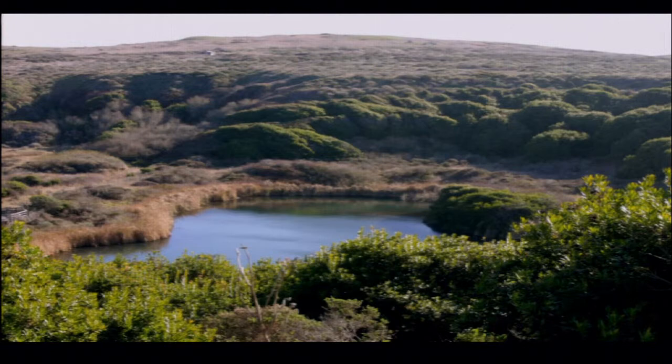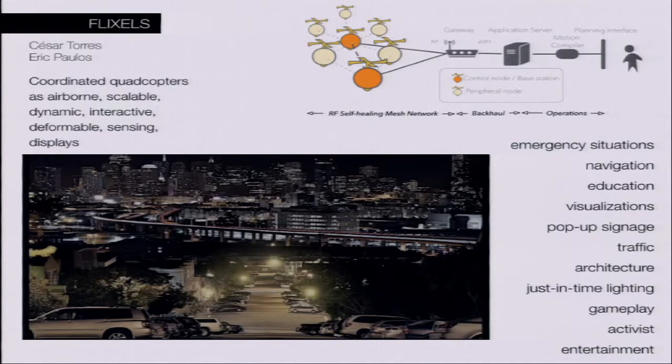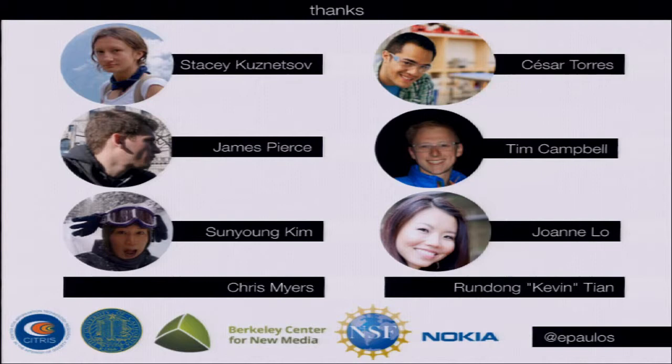We're trying to think about how we might promote the idea of having people interpret data in everyday space. One of the projects is the idea of Flixels — flying pixels using quadcopters. You could use collections and swarms of those as airborne, scalable, dynamic, interactive systems that can create a new kind of public display. There are lots of different application spaces we see for this, and we really think it provides a new authoring tool for people to participate not just in urban life, but in public life.